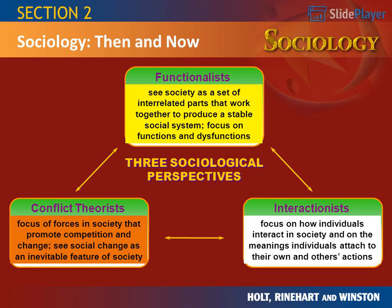Three Sociological Perspectives, Section 2: Sociology Then and Now. Functionalists see society as a set of interrelated parts that work together to produce a stable social system, focusing on functions and dysfunctions. Conflict Theorists focus on forces in society that promote competition and change, seeing social change as an inevitable feature of society. Interactionists focus on how individuals interact in society and on the meanings individuals attach to their own and others' actions.